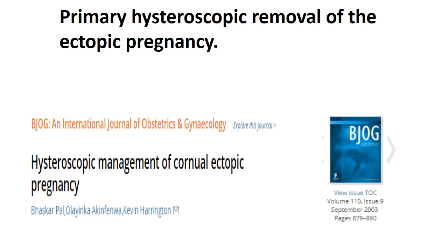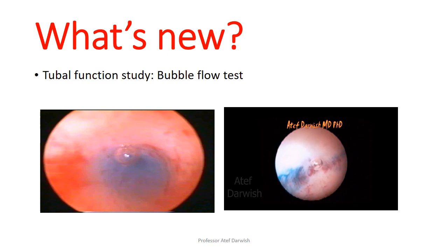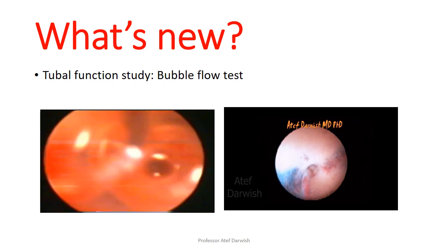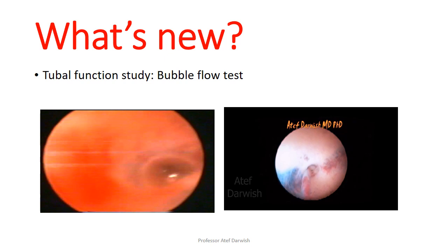Some scarce studies describe hysteroscopic removal of cornual ectopic pregnancy via hysteroscopy. All these procedures and more can be achieved when you concentrate on this part of the fallopian tube via hysteroscopy. What's new in this field is tubal function study, like the bubble flow test, which tests patency by observation of the passage of air bubbles inside the tubal ostium — or non-passage in cases of occlusion. As seen in the video, on the right side there is an organic cause — a fine polyp inside the intramural part — preventing air bubbles from crossing to the proximal fallopian tube, representing a negative bubble flow test.